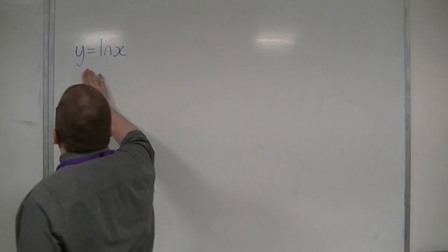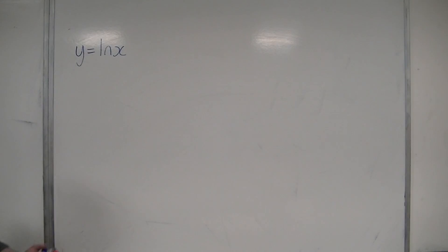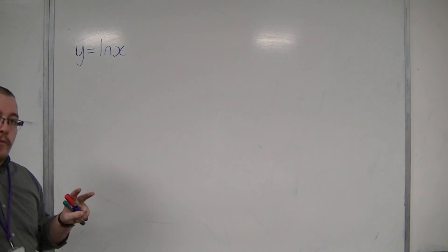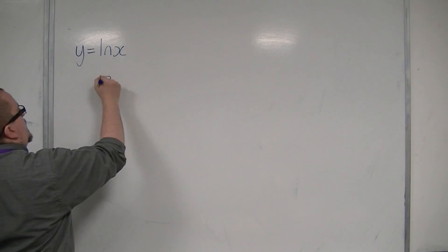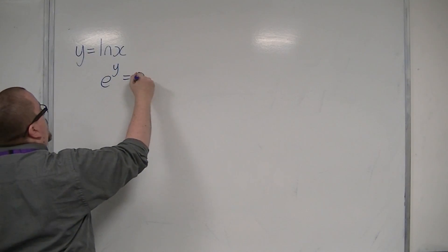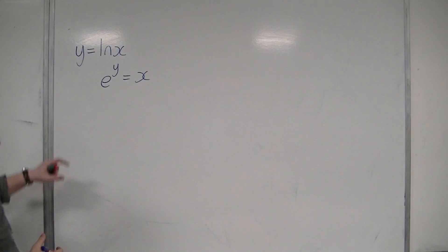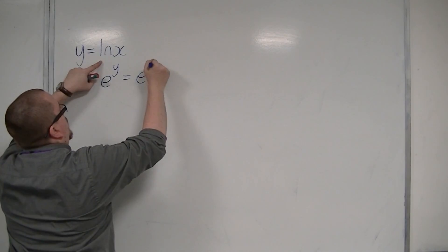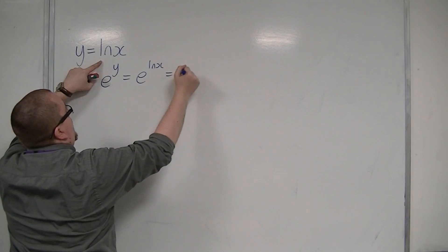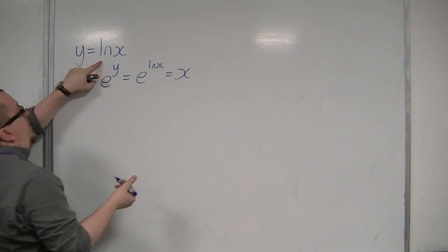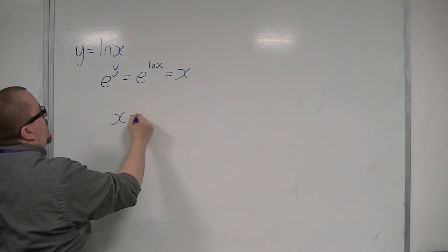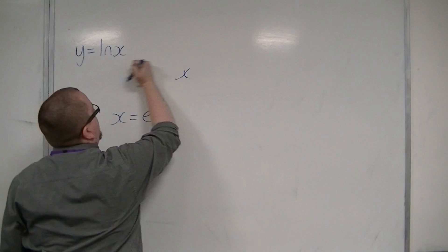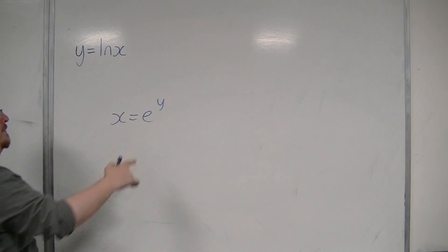So, if I can write y is equal to log x, then if I e both sides, then e to the y is equal to x, or e to the y is equal to e to the log x, and so e to the log x is just x. So in other words, what I have is x is equal to e to the y. That's the important point here, to go from that to that.